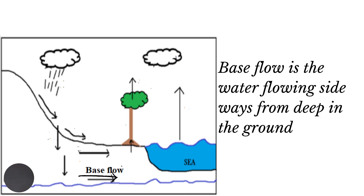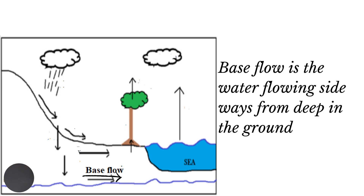Water which has percolated to the lower part of the ground may flow sideways as base flow or groundwater flow. Groundwater flow is important during times of drought because this is the main source from which rivers are supplied with their water at that time.